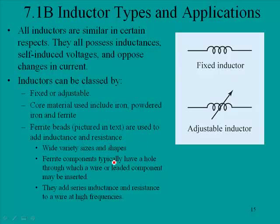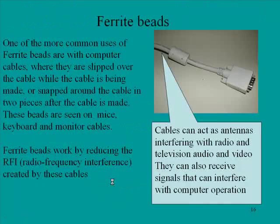Ferrite components typically have a hole through which a wire or leaded component may be inserted. They add series inductance and resistance to a wire at high frequencies, and this is where they can be used to choke out unwanted high frequencies.